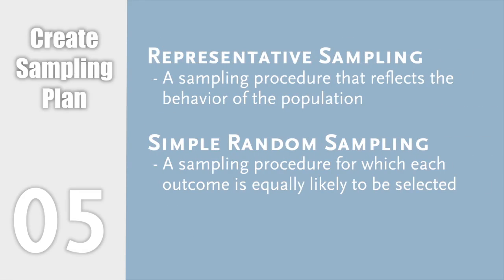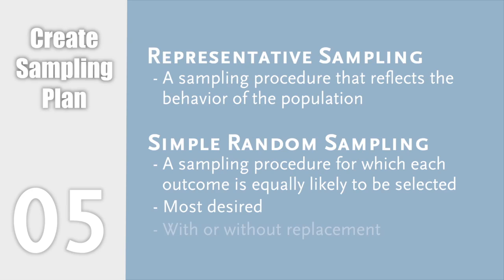Representative samples mimic the behavior of the population. How we sample can introduce bias into our process and impact the significance of the result. Random sampling is the desired type of sampling, but typically the hardest to attain in real-world applications. The two most common types of random sampling are with and without replacement.